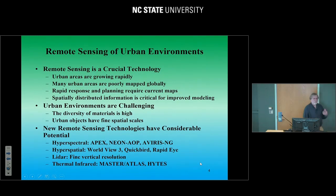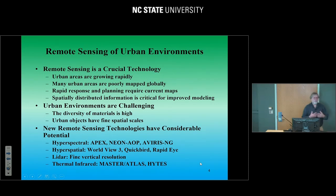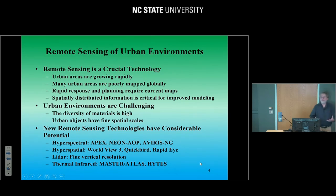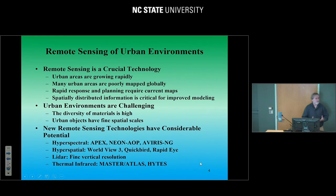For that, remote sensing is absolutely crucial — it's a technology with the potential to tell us a lot about urban environments. Urban areas are growing very rapidly, so if we want to monitor their growth globally, we need a technology that can give us a quick snapshot. Many of them are poorly mapped — we have reasonably good maps in the United States, but many parts of the world we do not. And so if we want up-to-date maps, we're going to need remote sensing.